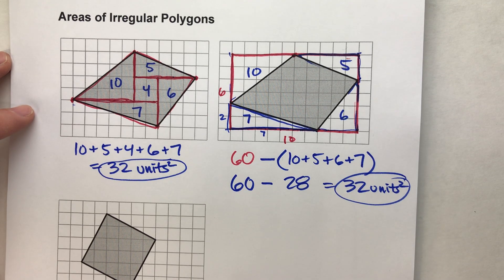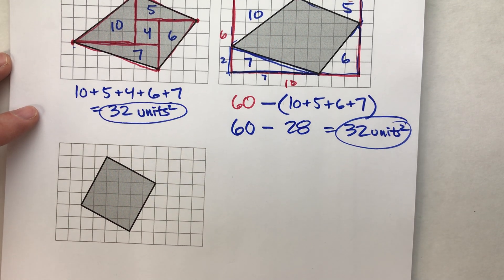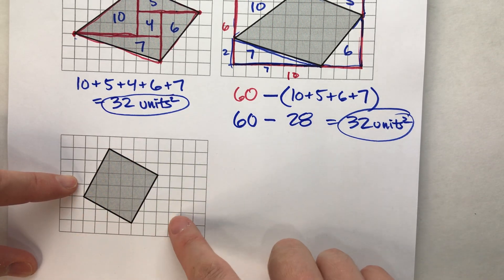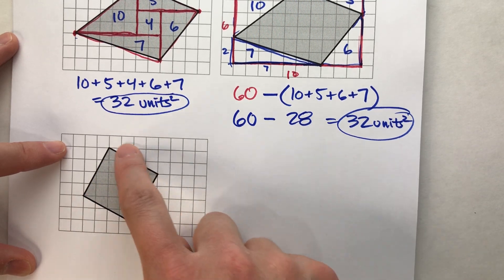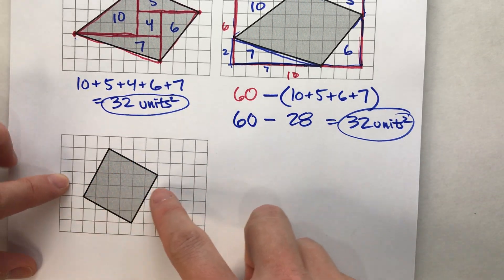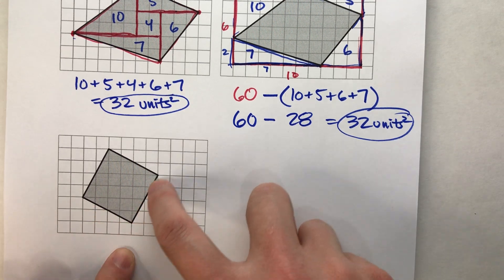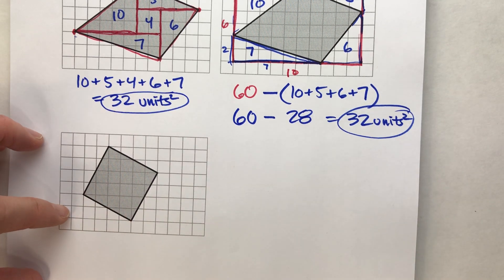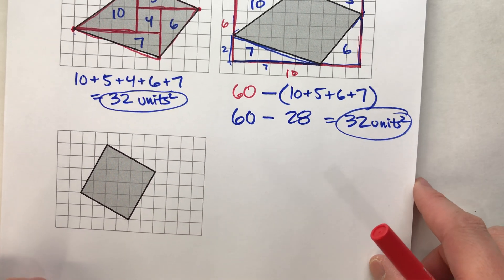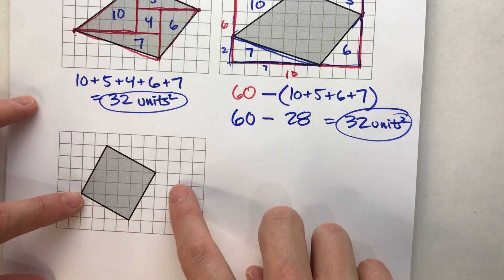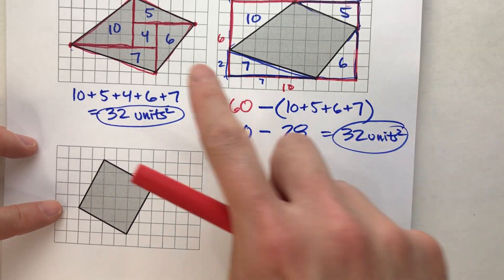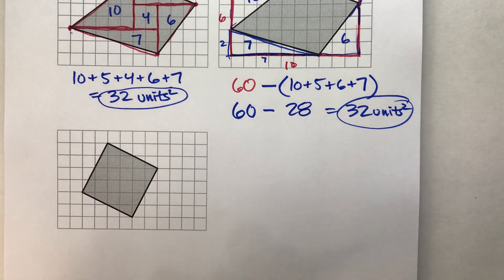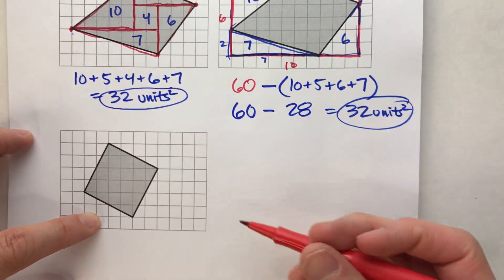I'll show you one more area of a polygon. What's funny about this one is that this last example is not an irregular polygon — it's actually a square. We know how to find the area of a square: side times side. But notice I don't know the length of these sides, so I can't just do side times side. And I can't count them because since it's going diagonally, I don't know what the length is. So sometimes when you have basic shapes, you still have to use these methods to find the area.